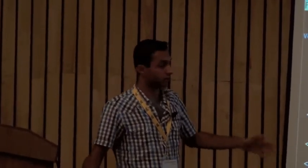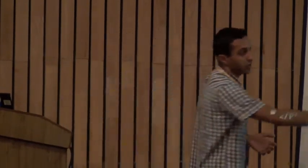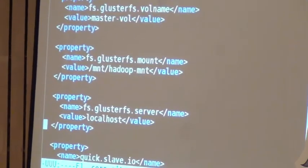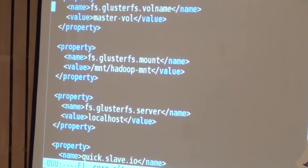Currently I am running a single-node cluster on my laptop only. The fs.default.name should be in this format: glusterfs://hostname/volume. This localhost should be the name of your machine. This file will be present on all the machines — all the nodes in a cluster — so this should be the name of that particular machine.